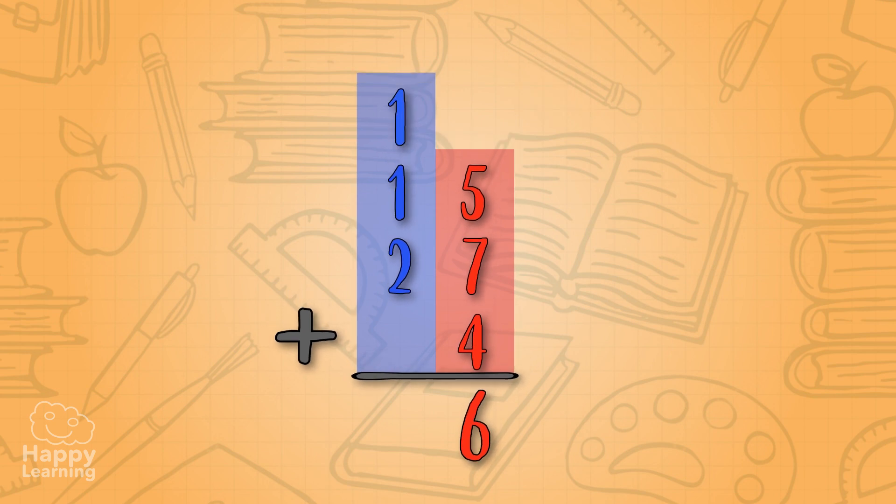Now, we can add up all tens! One plus one is two, plus two is four! And we put number four in the results, under tens! So the addition's final result is forty-six!